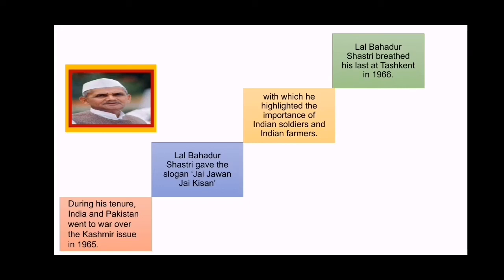Lal Bahadur Shastri breathed his last at Tashkent in 1966. He gave that slogan because on one side we were fighting with Pakistan, and on the other side we were facing a shortage of food — famine had occurred. To boost the energy of farmers and soldiers, he gave the slogan 'Jai Jawan, Jai Kisan.' He also asked the people to skip one meal, and on his call, people of our country stopped eating one time food.